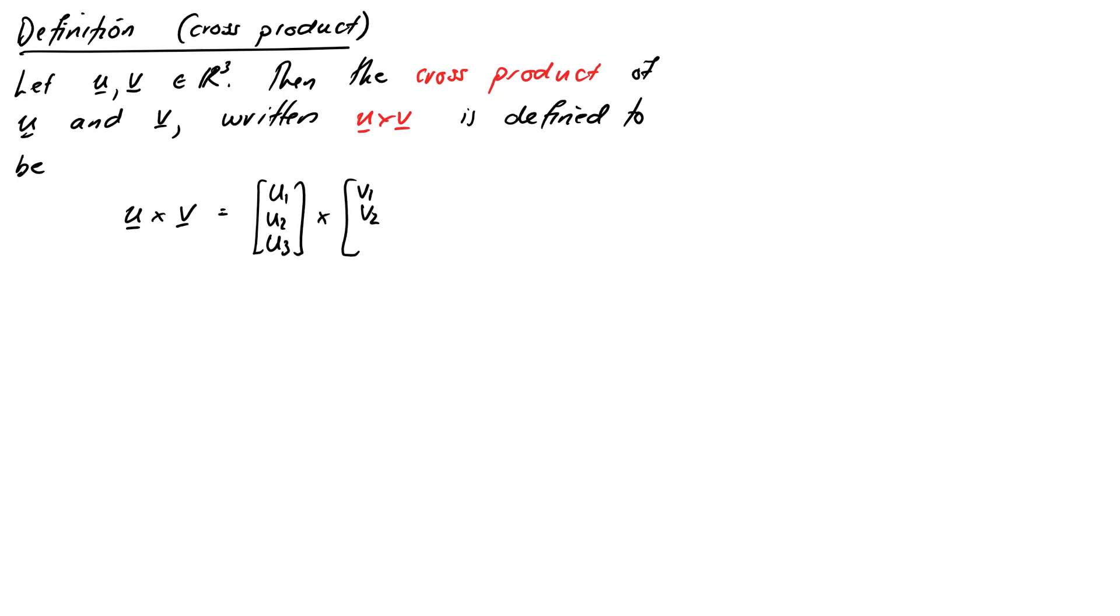So here's the definition. We've got two vectors u and v in R³, then the cross product of u and v, which is written u × v, just use the cross times symbol, is defined to be u₁, u₂, u₃ cross v₁, v₂, v³, which equals (u₂v₃ - u₃v₂, u₃v₁ - u₁v₃, u₁v₂ - u₂v₁). That's a bit like the Dr. Seuss of definitions.